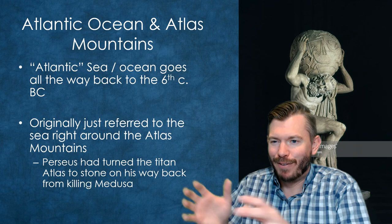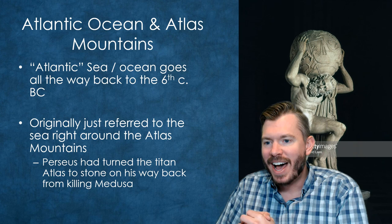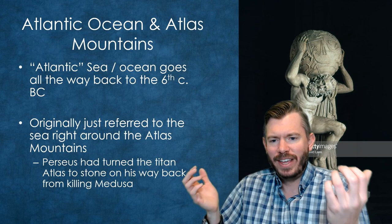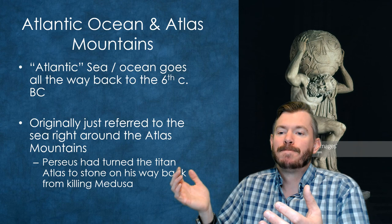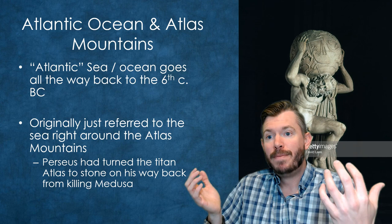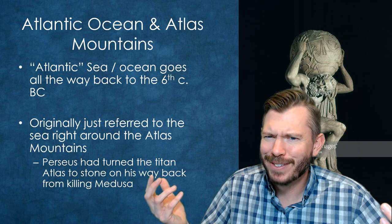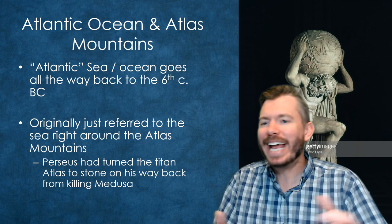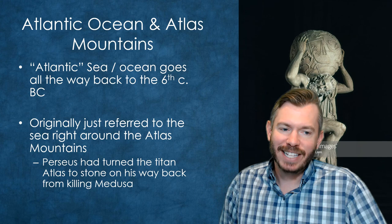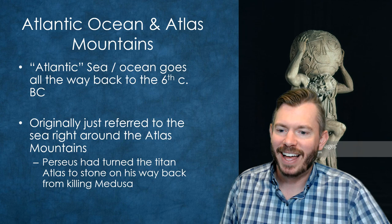We also have the Atlantic Ocean and the Atlas Mountains. The idea of the Atlantic Sea goes all the way back to ancient Greek times — the sea gets its name because it's the body of water next to the Atlas Mountains. And we heard earlier how that mountain range gets its name: Perseus, traveling back after killing Medusa, encounters Atlas trying to fight him, and Perseus uses the Medusa's head to turn him to stone — creating the Atlas Mountains.